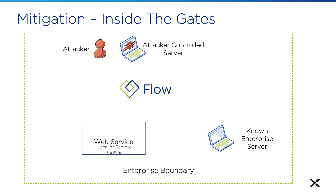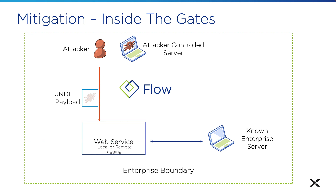Taking another look at the attack chain, we see that the attacker gets in with a simple web request. Then our web server needs to send outbound requests to DNS and then other valid servers that the attacker controls. Now, we're in charge of our network, so we should know the valid DNS and valid other servers that this web service should be allowed to communicate with. Let's just stop our web server from sending traffic to unknown destinations and only allow traffic to known internal and external servers.